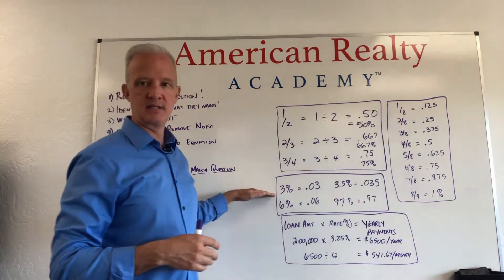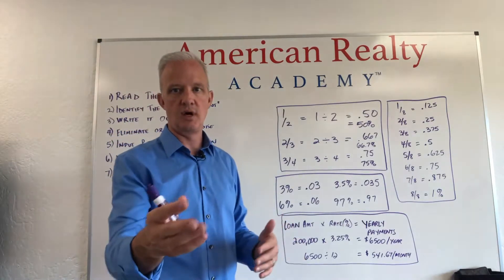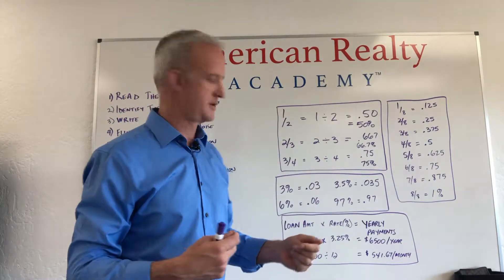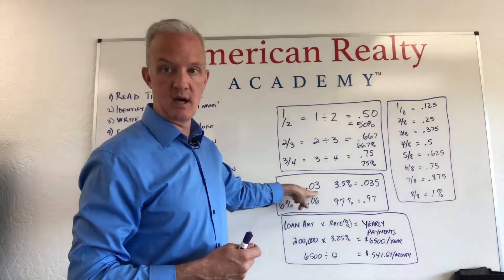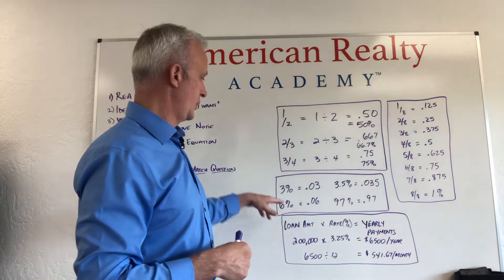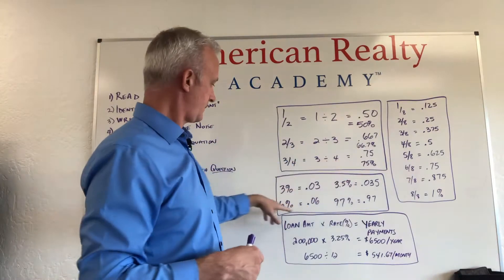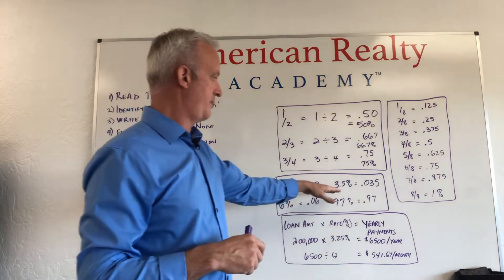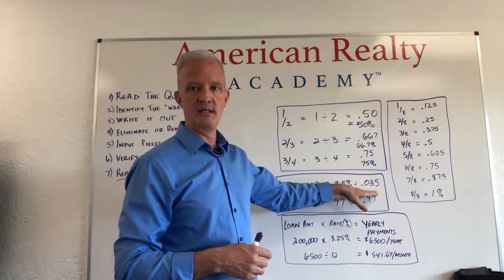Next thing — everybody likes talking about their commissions. It's the simplest thing in the world. If I tell you that you sold a $100,000 house and you got a 3% commission, you could automatically say you got $3,000. A hundred thousand times 3% — or 0.03 on your calculator — gives you the right answer. We convert 3% to 0.03. Similarly, 6% is 0.06. And if it's 3.5%, that's 0.035.